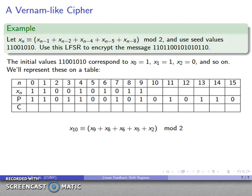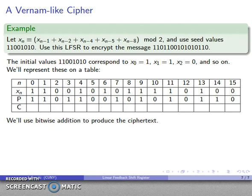And, again, I can find x10 the same way. Linear recurrence relation. Find the values. Reduce mod 2. Find x11. x12. x13. And so on. And, at this point, I can use Bitwise addition to produce my cipher text. So, I'll go ahead and do the Bitwise addition along the row with the plain text. And there's my cipher text.